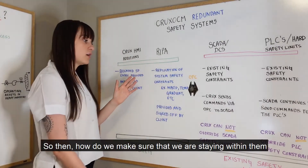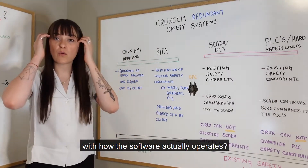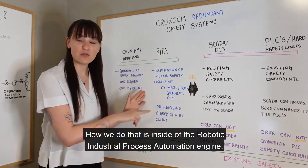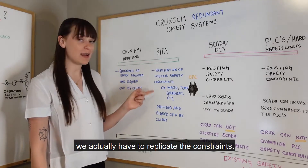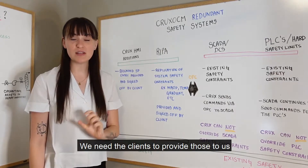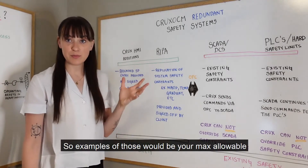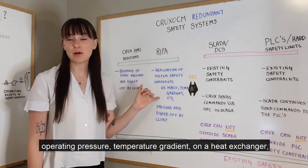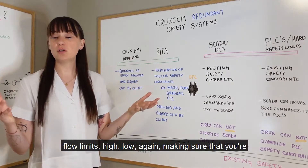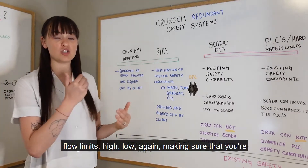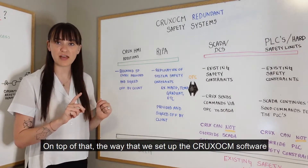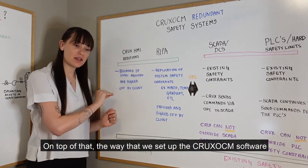To make sure we stay within those constraints in how the software actually operates: inside the robotic industrial process automation engine, we replicate the constraints. We need the client to provide those to us and sign off that they are correct. Examples include maximum allowable operating pressure, temperature gradient on a heat exchanger, and flow limits — high and low — ensuring you're well within the bounds of safe operation.